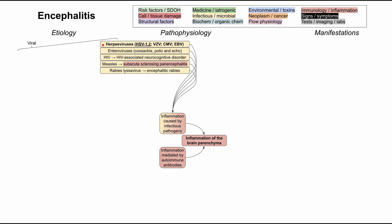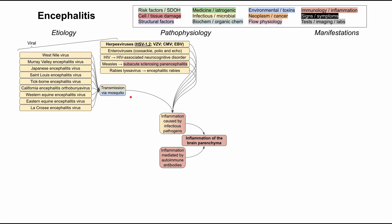Other viruses include the enterovirus family, which includes Coxsackievirus, poliovirus, and echovirus. HIV can cause encephalitis — in that case it's called HIV-associated neurocognitive disorder. The measles virus can also cause encephalitis, as well as the grim sequela of subacute sclerosing panencephalitis, which is a good reason to vaccinate against measles. Rabies lyssavirus can also cause encephalitis, called encephalitic rabies. There are also roughly nine viruses that cause encephalitis transmitted through mosquitoes.